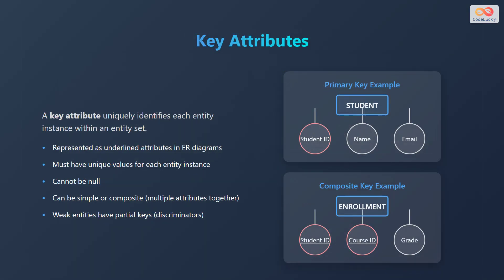A key attribute uniquely identifies each entity instance within an entity set. They are represented as underlined attributes in Entity Relationship diagrams. Key attributes must have unique values for each entity instance and cannot be null. Key attributes can be simple or composite, involving multiple attributes together. Weak entities have partial keys known as discriminators. For example, student ID is the key attribute for the student entity. For the enrollment entity, student ID and course ID are composite key attributes.